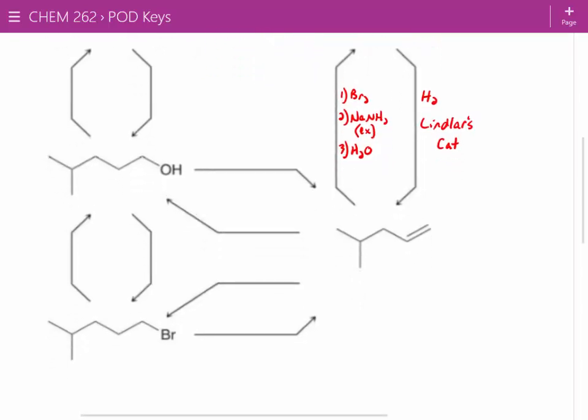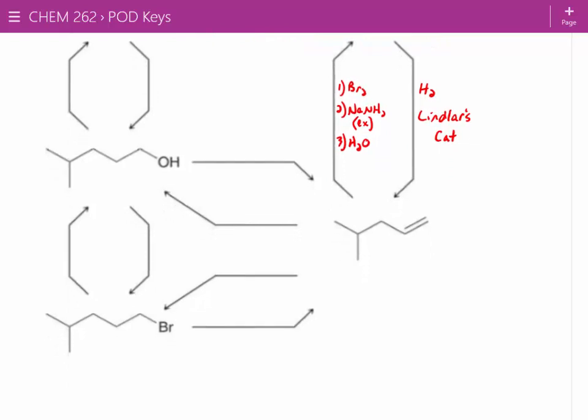If we want to form this alkene, we can do it from our alkyl halide by using sodium amide. In that case, even if we add excess, alkenes aren't acidic enough to be deprotonated. They can only deprotonate alkynes.